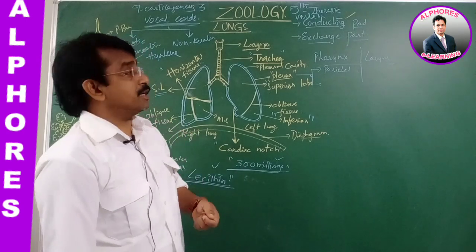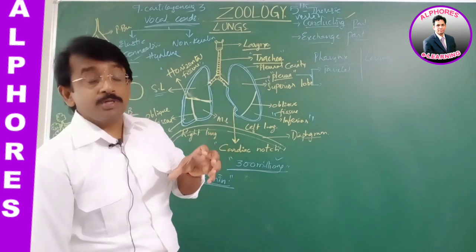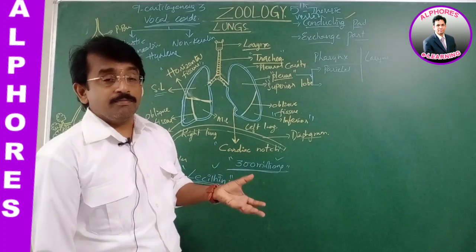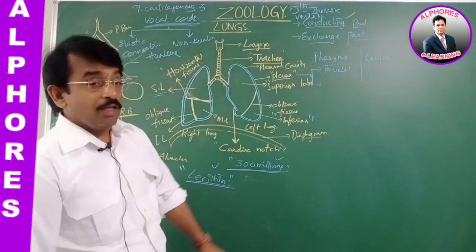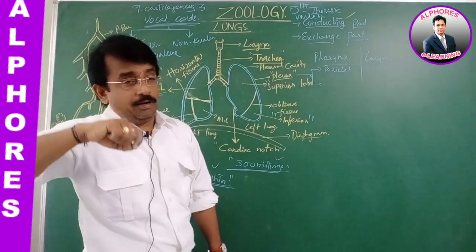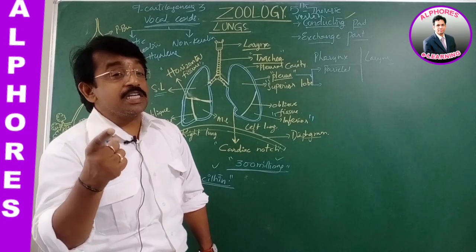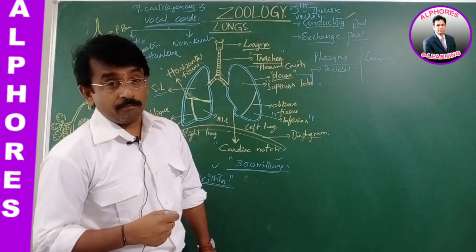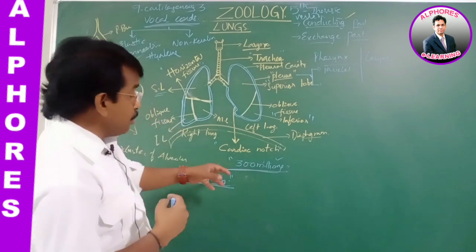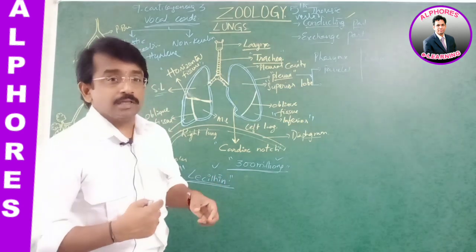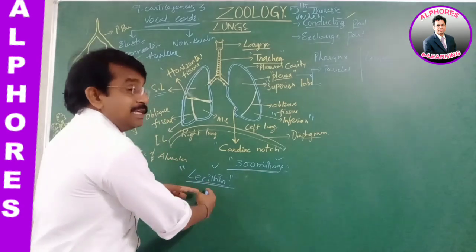Tobacco contains nicotine, a chemical, and carbon monoxide, a carcinogen. Tobacco consumption, when chewed, causes oral cancer, and when smoked, it results in lung cancer. In tobacco smoking, the alveoli get damaged and enlarged, forming folds. The lecithin lining is damaged first.